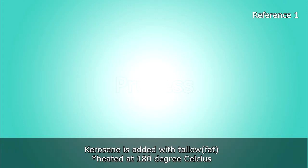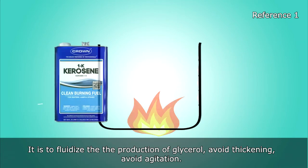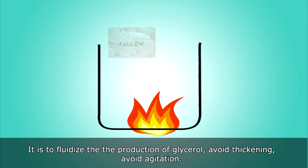Kerosene is added with tallow and heated at 180 degrees Celsius. This is to fluidize the production of glycerol, avoid thickening, and avoid agitation.